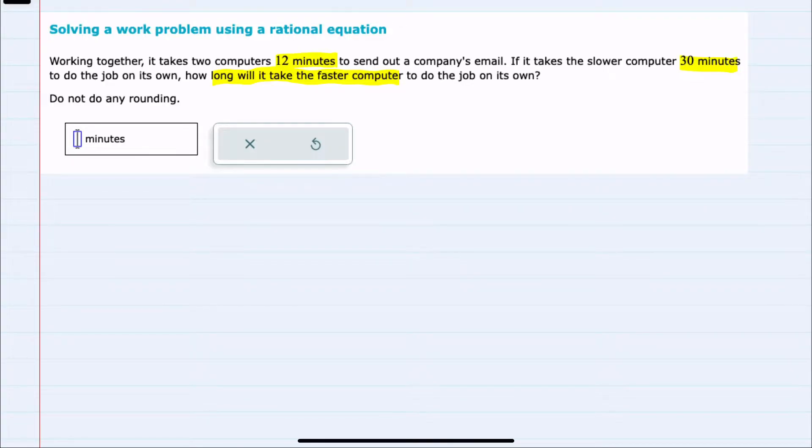So I'll start by just labeling what I know. We've got a slow computer, a fast computer, and we have the computers working together. And I was told the time. So for example, together I know it takes 12 minutes to send out the email.